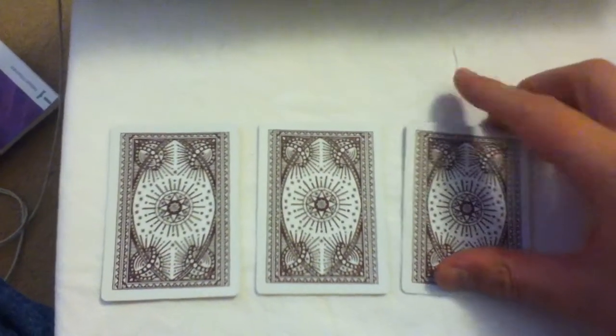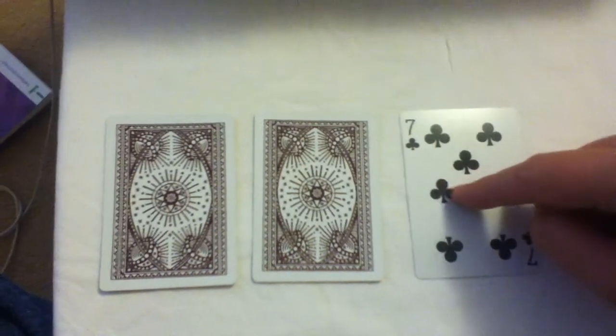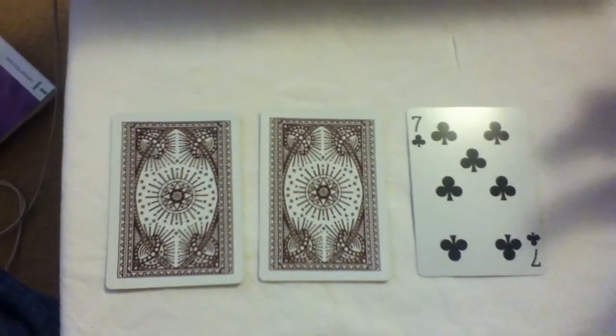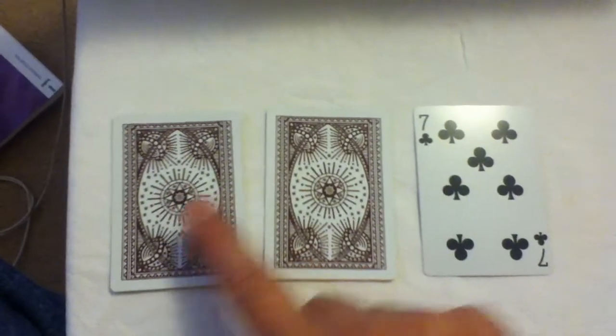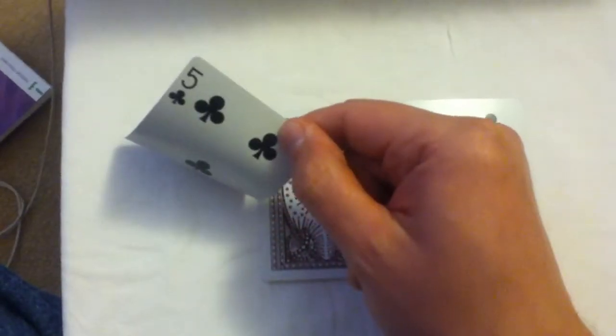And then showing the person a wrong answer. So a wrong answer here is the seven. And then I'd offer them the chance to change their mind. Of course, if they change their mind, they then win in this case. If they keep with the five, they don't win.